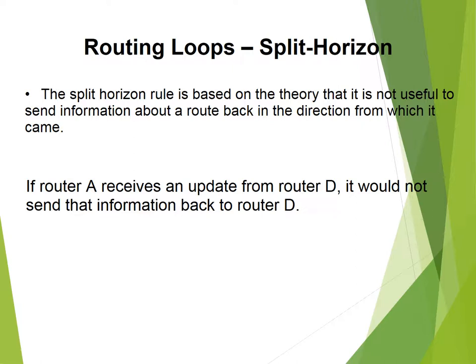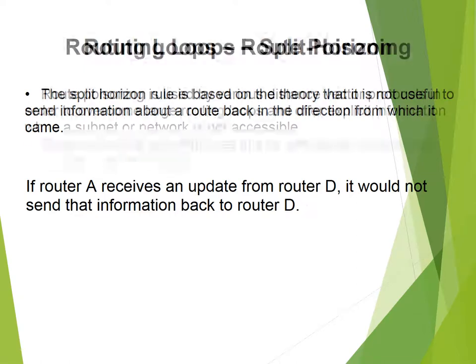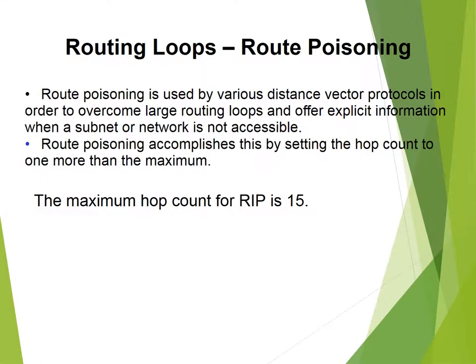The Split Horizon rule is based on the theory that it is not useful to send information about a route back in the direction from which it came. If Router A received an update from Router D, it would not send that information back to Router B, avoiding a routing loop to Router B using route poisoning.